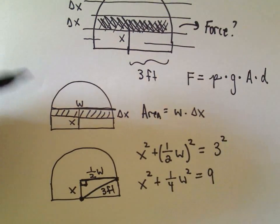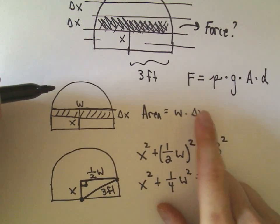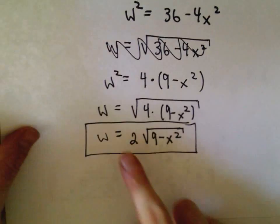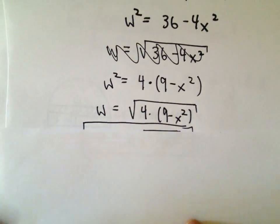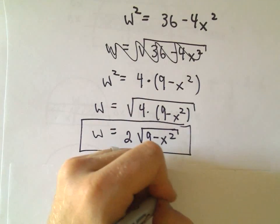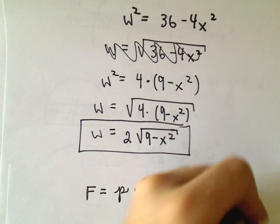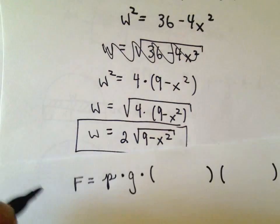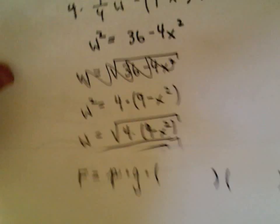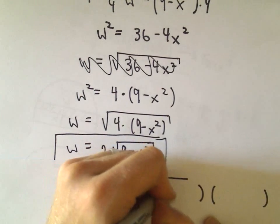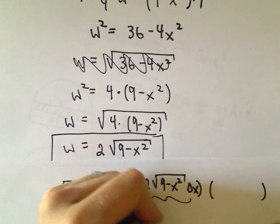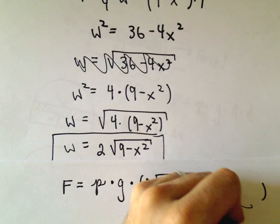We were trying to find an expression for w, because to get the area I just take w times delta x. We figured out an expression for w using the Pythagorean theorem. So the force on the i-th slice is going to be the density times the acceleration due to gravity times the area. The area is the width times the height: 2 times the square root of 9 minus x squared, all multiplied by delta x.